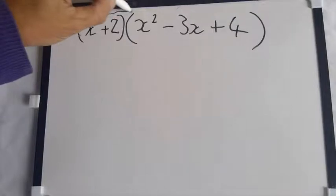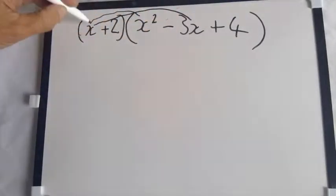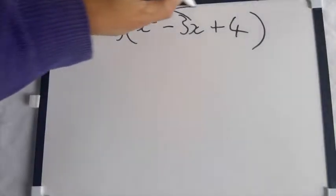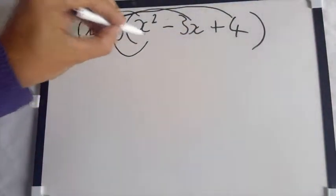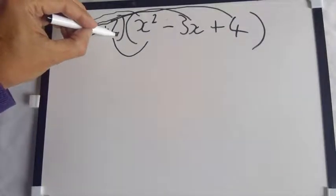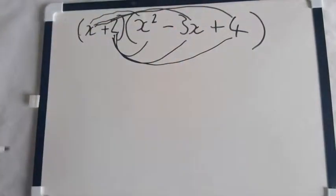That makes your x multiplies the x squared, x multiplies the 3x, x multiplies the 4. And then the second thing in the brackets, the 2 has got to multiply the x squared, the 2 has got to multiply the minus 3x, and the 2 has got to multiply the minus 4.